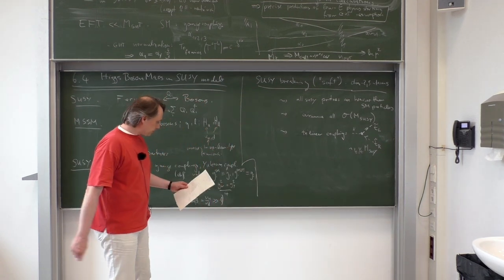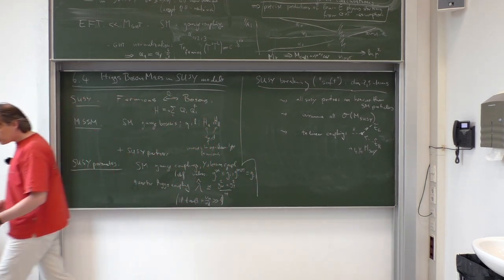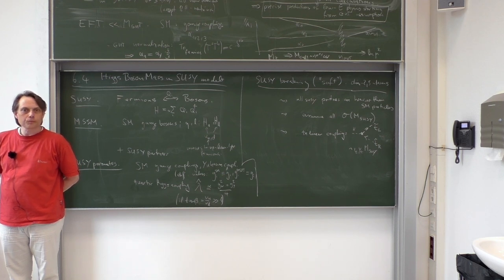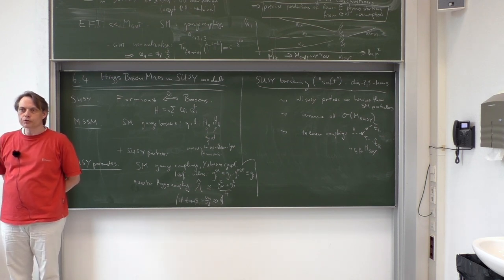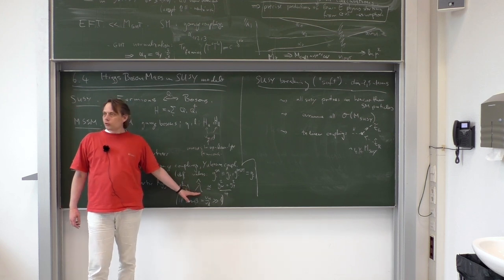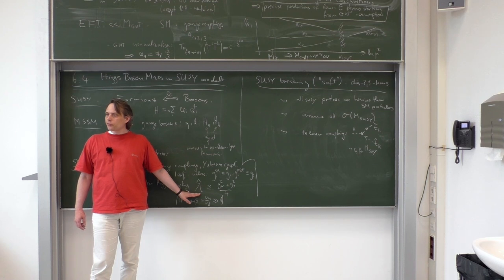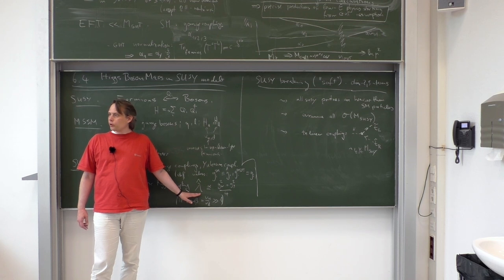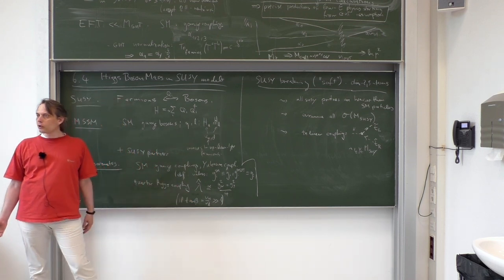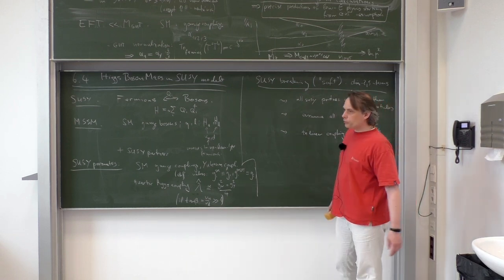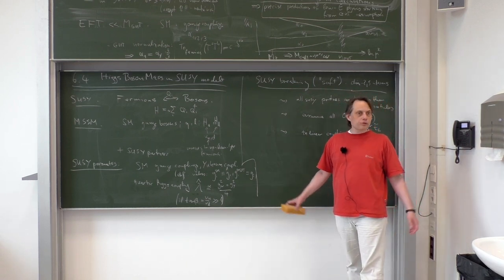The question is: what is the MSSM prediction for the Higgs boson mass observed at the LHC, measured to be 125 GeV? Since the quartic Higgs self-coupling is not a free parameter and it gives rise to the Higgs mass, the Higgs mass is not free — we can calculate the SUSY prediction. This calculation needs to be done precisely; an imprecise calculation will not give agreement with the measurement value.